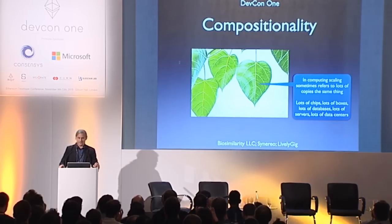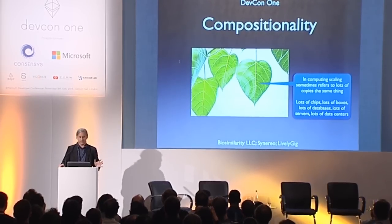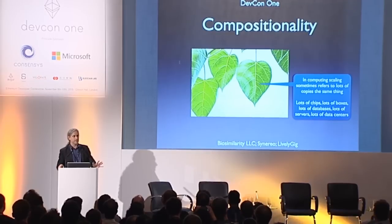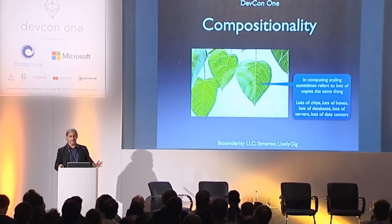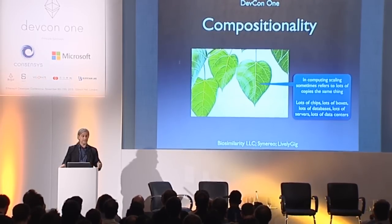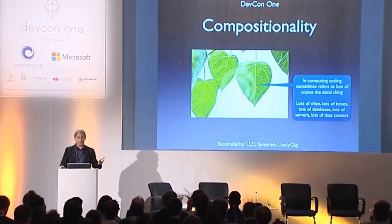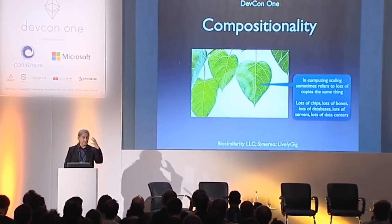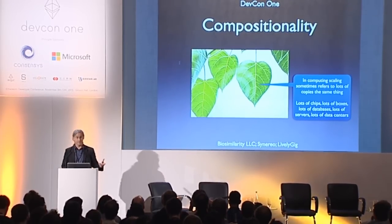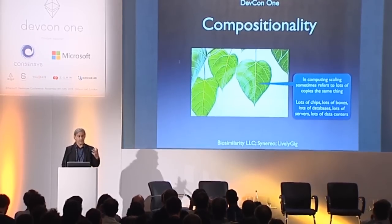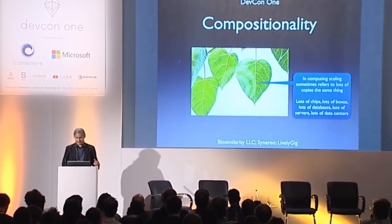In computing, scaling refers to lots and lots of copies of things that are potentially not reliable individually — lots of chips, boxes, databases, servers, data centers. That's the traditional high-volume, high-performance notion of scaling. Compositionality turns this upside down.